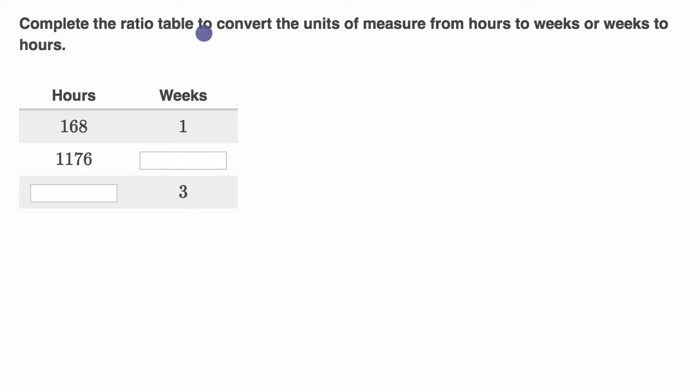We're told to complete the ratio table to convert the units of measure from hours to weeks or weeks to hours. So we see here, they've told us already that there's 168 hours for every one week. One way to think about it is the ratio of hours for every week is 168 to one. And then they calculate if we have 1,176 hours, how many weeks is that going to be?